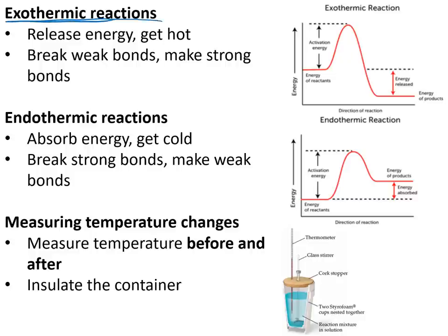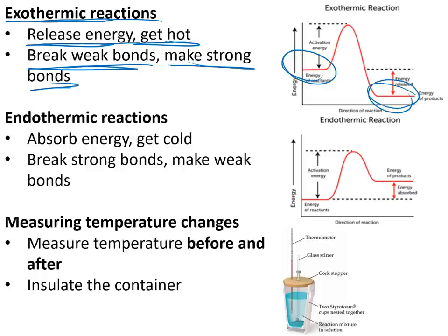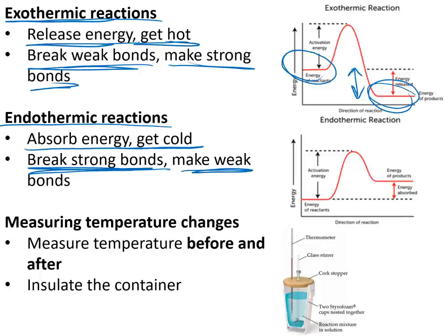Exothermic reactions release energy and get hotter, involving breaking weaker bonds and making stronger bonds. On a reaction profile, the reactants have more energy than the products, and that difference is the energy given out. Endothermic reactions absorb energy and get colder, involving breaking strong bonds and making weak bonds. On the reaction profile, the reactants have less energy than the products, and that difference is the energy absorbed.